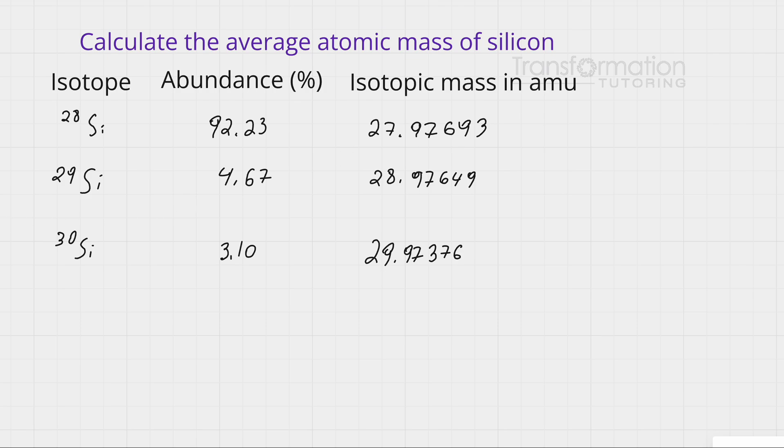It is 27.97693 for the first one, and so on. Percent abundance is the percent that this isotope is found on Earth. You can see that silicon-28 has the highest percent abundance. How do you calculate the average atomic mass? You take the isotopic mass of each isotope. Let's start with silicon-28.